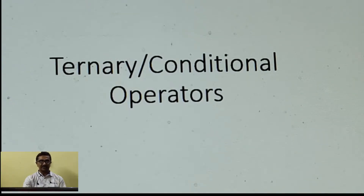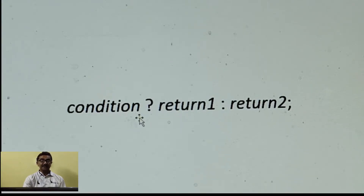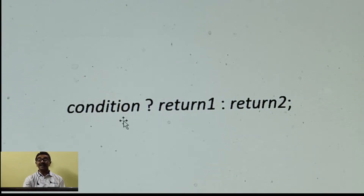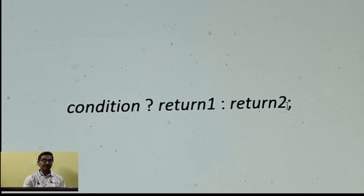Now let's see the general syntax of this operator. The first operand is the condition, followed by the value it is going to return if the condition is true, followed by the value it returns if the condition is false. A question mark indicates the statement after it gets executed if the condition is true, and the colon indicates the value returned if the condition is false.